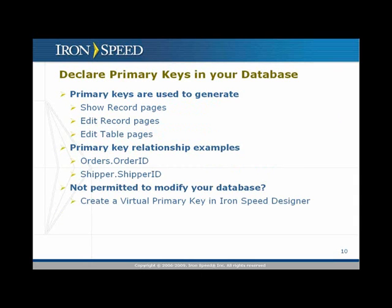Next, as I mentioned earlier, declare primary keys in your database. Most databases do have primary key relationships declared, but Ironspeed Designer uses primary keys to generate show record, edit record, and edit table pages — we need a primary key value to grab a specific record for display or editing. If you don't have a primary key declared, you can create a virtual primary key in Ironspeed Designer, which instructs Designer to treat that field as if it were a primary key. This is particularly important for database views, since most views don't have explicitly declared primary keys, so you'll want to use the VPK facility to declare that field as a primary key.